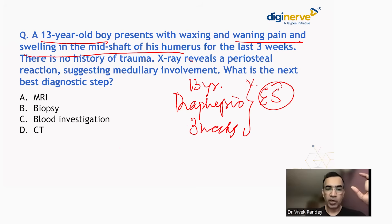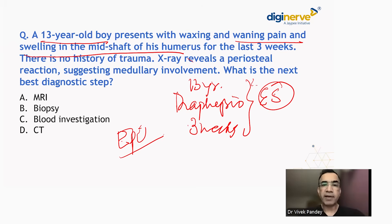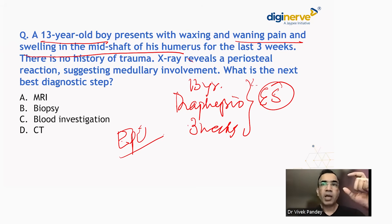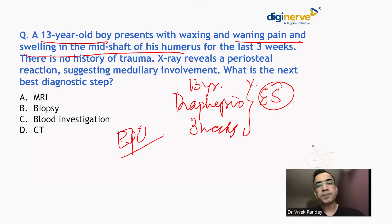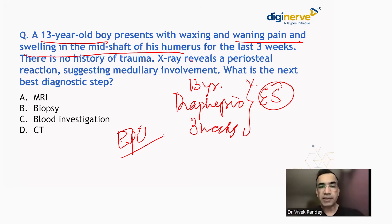We know that epiphysis lesions are usually giant cell tumor or chondroblastoma; metaphysis is usually osteosarcoma; and diaphysis is usually Ewing's sarcoma. Someone might ask — why not infection? Because without trauma, even if we consider osteomyelitis, hematogenous osteomyelitis is far more common in the metaphysis rather than the diaphysis. So the features point more toward Ewing's sarcoma.